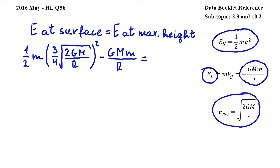This is equal to the total energy of the probe at its maximum height. Since the speed of the probe at its maximum height is zero, it will only have gravitational potential energy. We can express this gravitational potential energy using the second equation, which gives us negative GMm over the distance between the probe and the center of the planet. This distance is equal to the radius of the planet plus the maximum height reached by the probe, which I will express as R plus H, where H denotes the maximum height reached by the probe.